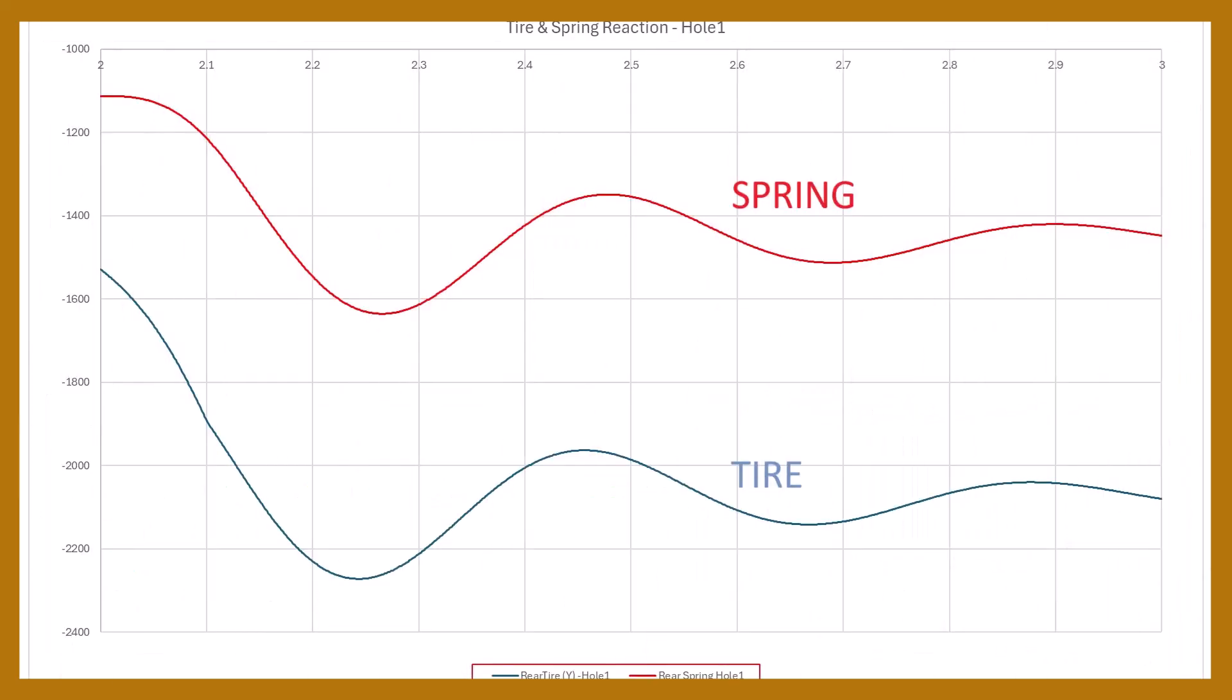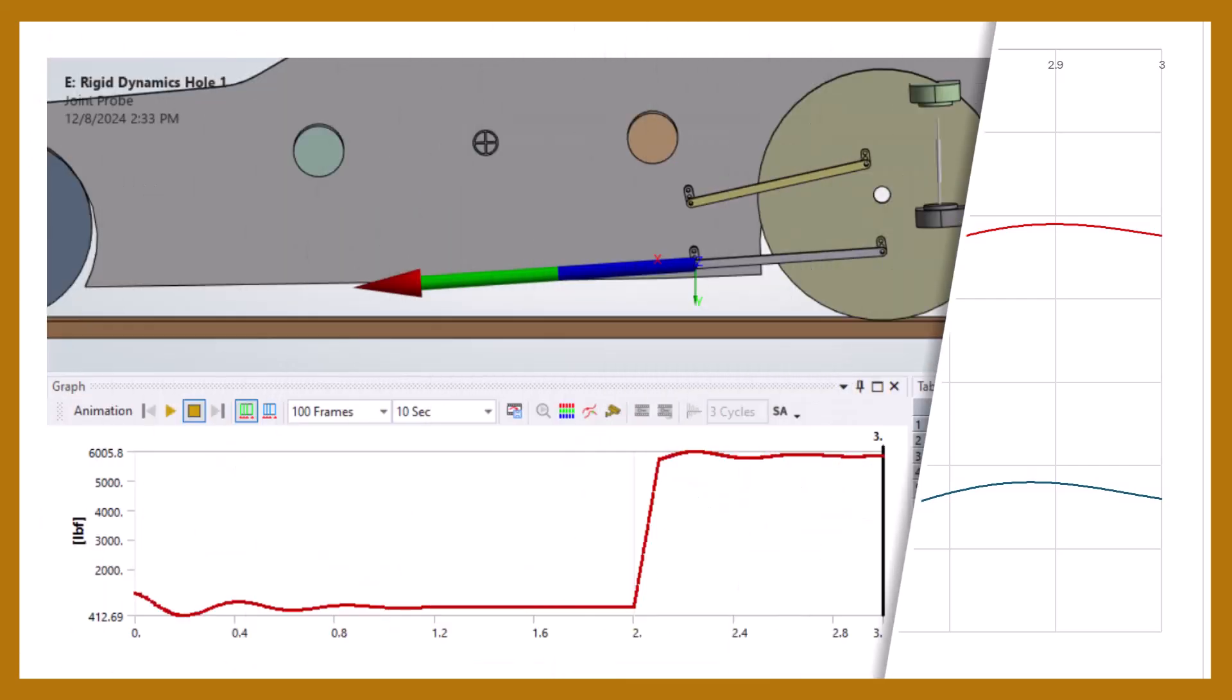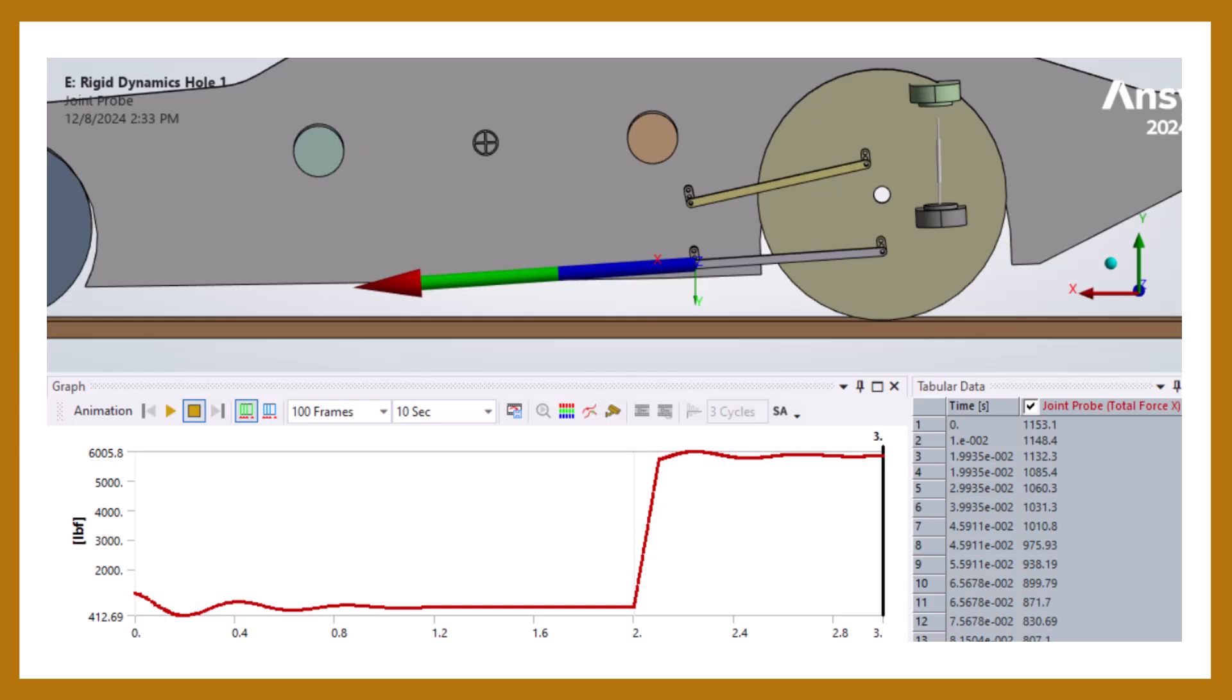Here's a plot of the rear tire and spring reactions. These would be divided by 2 to represent both sides of the car. Here's a plot of the lower bar force. This force can be used to determine the correct tube and rod end size.